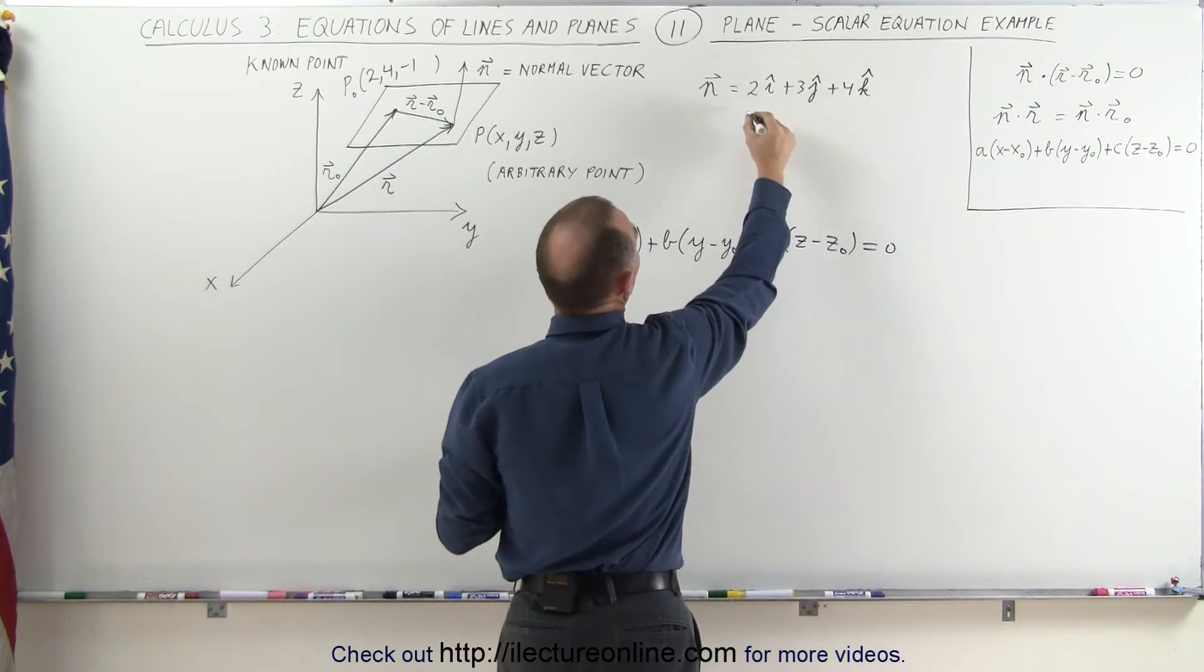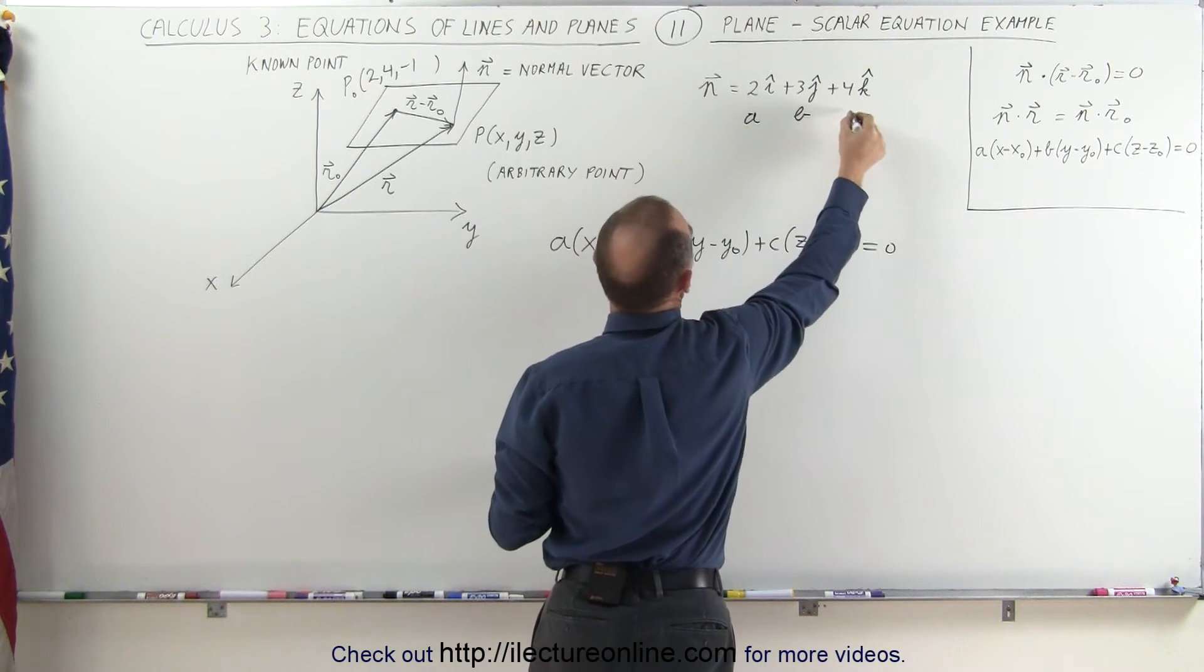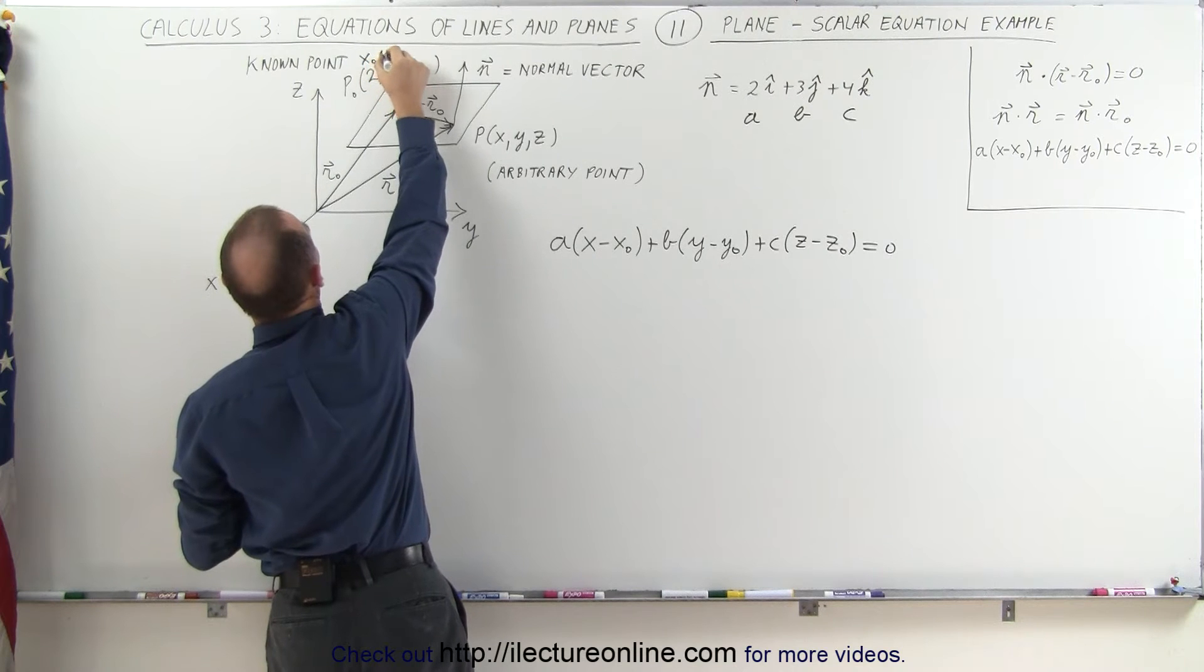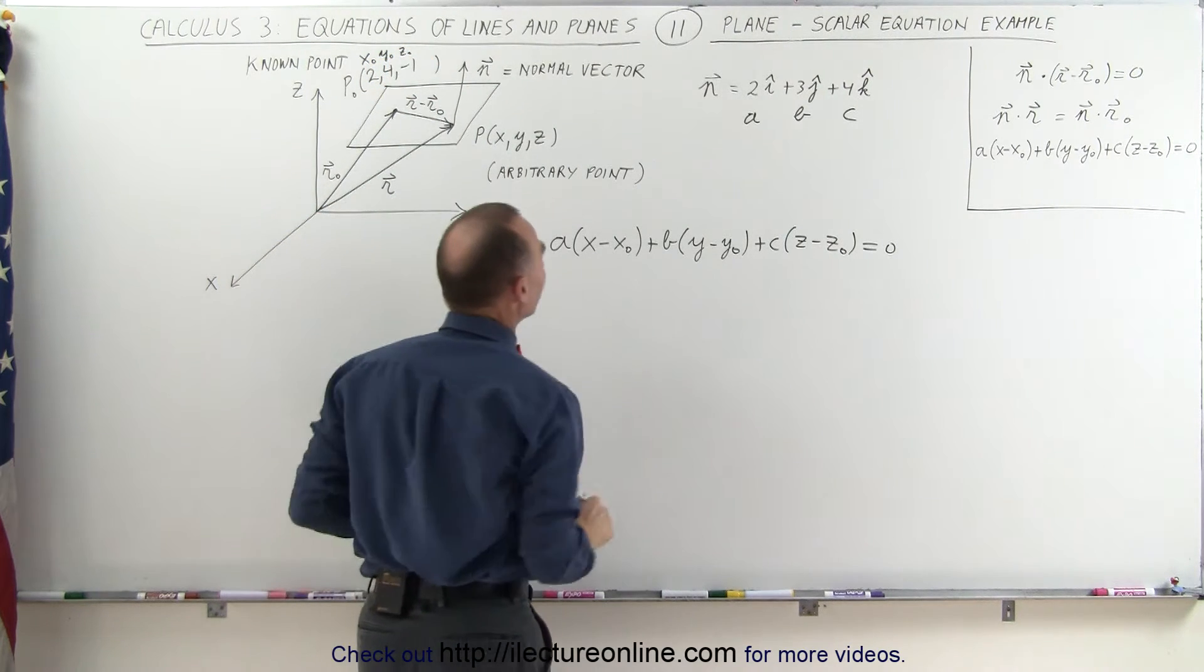Notice that A, B, C - this is our A, this is our B, this is our C. This is our X sub-naught, Y sub-naught, and Z sub-naught right there. Let's plug them in.